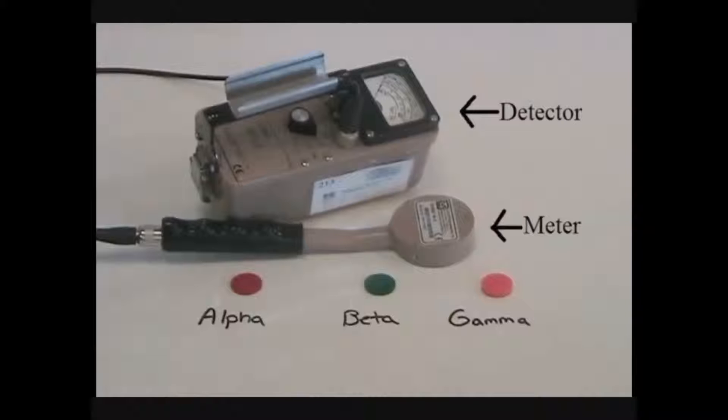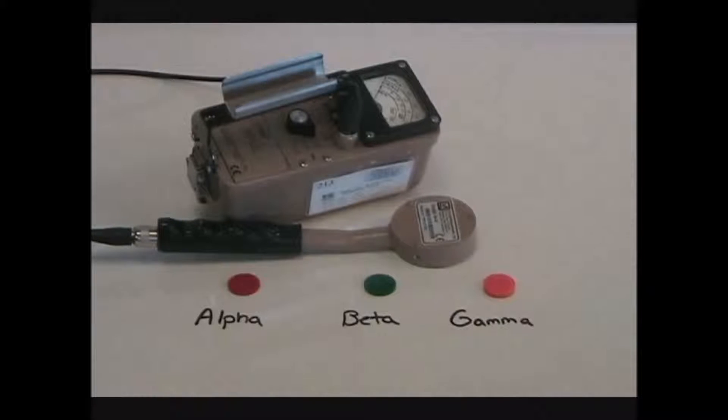This is a survey meter with a pancake Geiger-Mueller detector attached, which is an instrument that can measure alpha, beta, and gamma radiation.